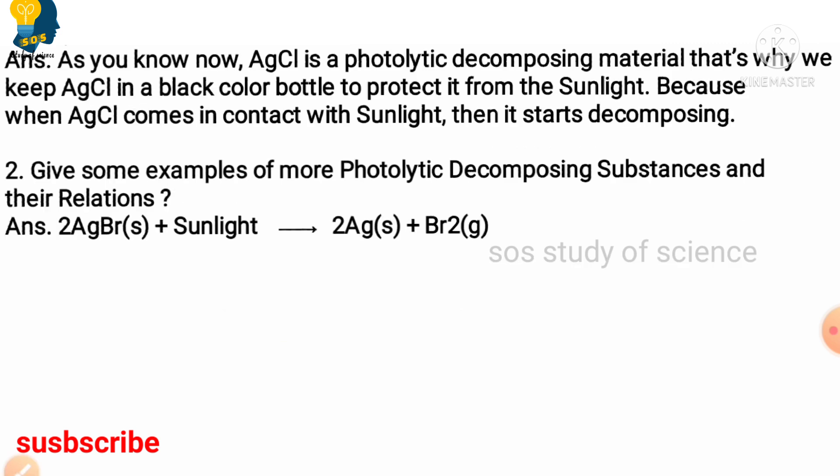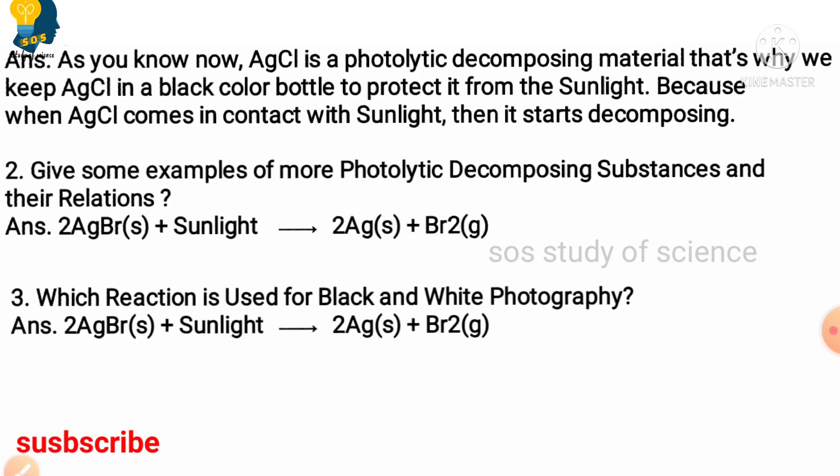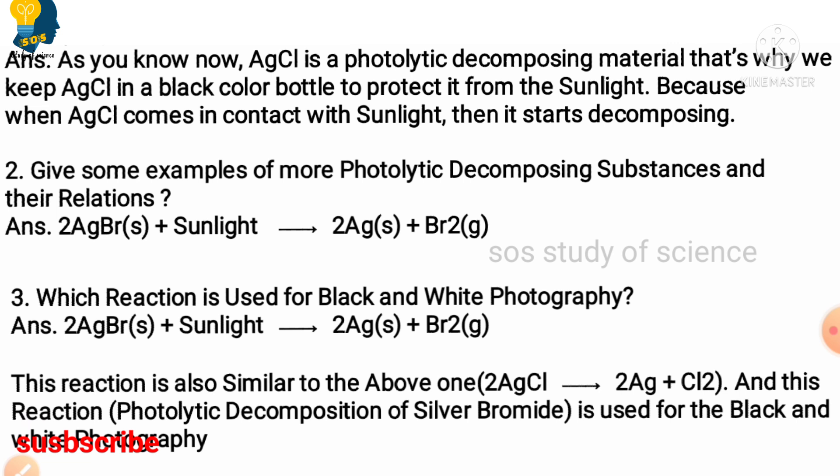Moving to next one, which reaction is used for black and white photography? You can see the equation, silver bromide kept under the sunlight to form silver and bromine. This particular equation is representing the black and white photography. And this reaction is also similar to the above one, that is silver chloride kept under the sunlight to form silver and chlorine. Both these reactions are the examples for black and white photography.